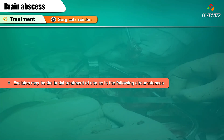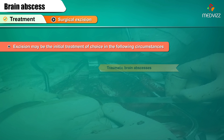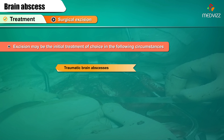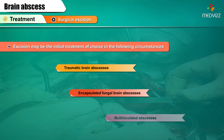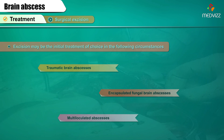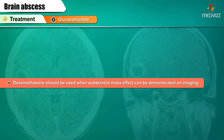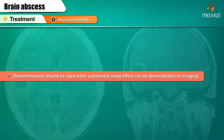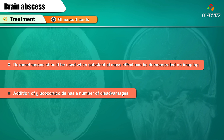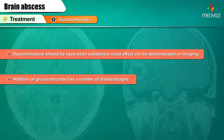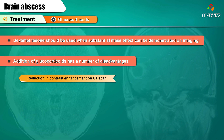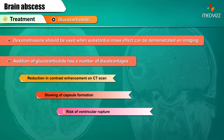However, excision may be the initial treatment of choice in the following circumstances: traumatic brain abscesses to remove bone chips and foreign material, encapsulated fungal brain abscesses, and multiloculated abscesses. Glucocorticoids, like dexamethasone, should be used when substantial mass effect can be demonstrated on imaging. Disadvantages of glucocorticoids include reduction in contrast enhancement on CT scan, slowing of capsule formation, increasing the risk of ventricular rupture, and decreasing the penetration of antibiotics into the abscess.